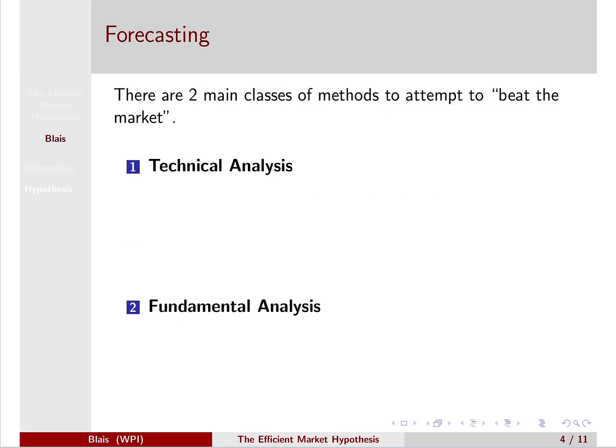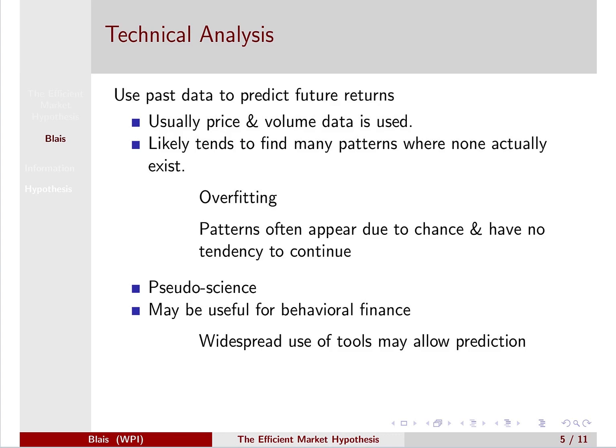This leads us to the idea of forecasting. Can you get an edge? Can you beat the market? There is a lot of evidence that this really isn't possible in a systematic way. There are two main camps that deal with forecasting of prices: technical analysis and fundamental analysis. We'll deal with technical analysis first because it's the easiest to describe and then dismiss as pseudoscience.